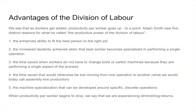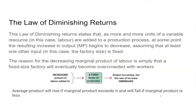There's less extra benefit or product. The law of diminishing returns is a very important concept in economics. It says that as more and more units of a variable resource — in this case labor — are added to the production process, at some point the resulting increase in output, the marginal product, begins to decrease. This assumes that at least one other input is fixed, such as land or capital. The reason for decreasing marginal product of labor is simply that the fixed factor size will eventually become overcrowded with workers — the kitchen is only so big.